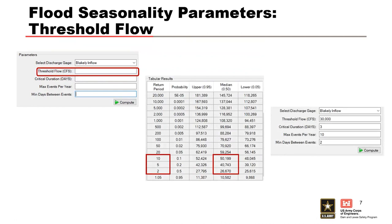There are two conflicting goals when selecting a threshold for identifying rare floods. One, the threshold needs to be high enough so only flood events are considered — we don't want something too small being considered a flood. Second, there needs to be a long enough period of record so that a large enough sample of flood events is used to reduce errors from a small sample size. Considering these two goals, the threshold should be rare enough while still providing sufficiently large sample sizes. A rule of thumb is to select a threshold flow that produces a sample size on the order of 30 to 40 flood events. Determining an appropriate threshold flow is often an iterative process.